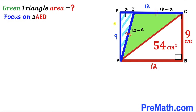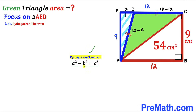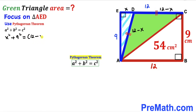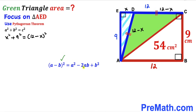Focusing on the blue right triangle AED, we apply the Pythagorean theorem: A² + B² = C². The hypotenuse is 12 − X and the two legs are X and 9, giving X² + 9² = (12 − X)². Expanding the right side using (A − B)² = A² − 2AB + B², we get X² + 81 = 144 − 24X + X².